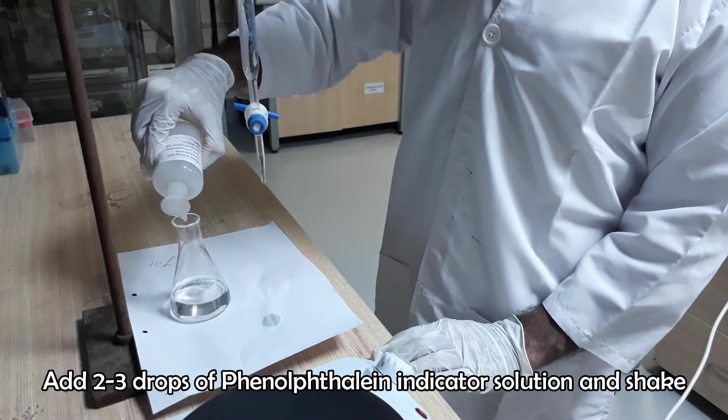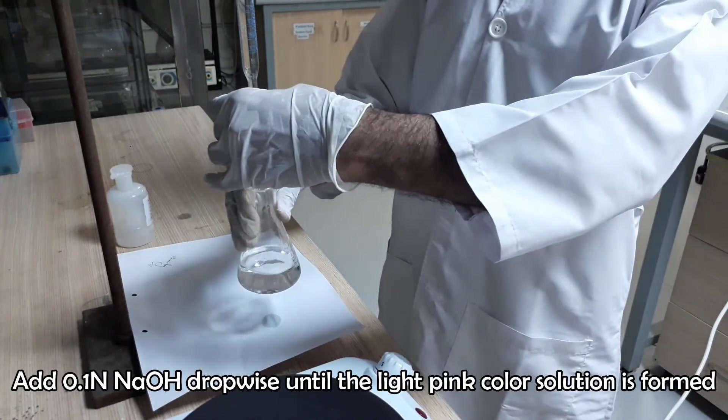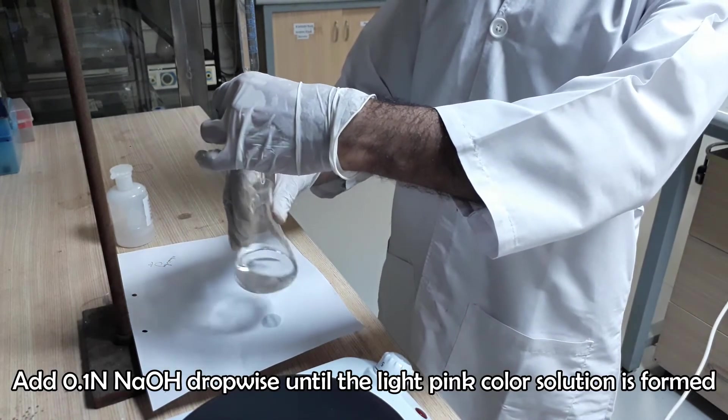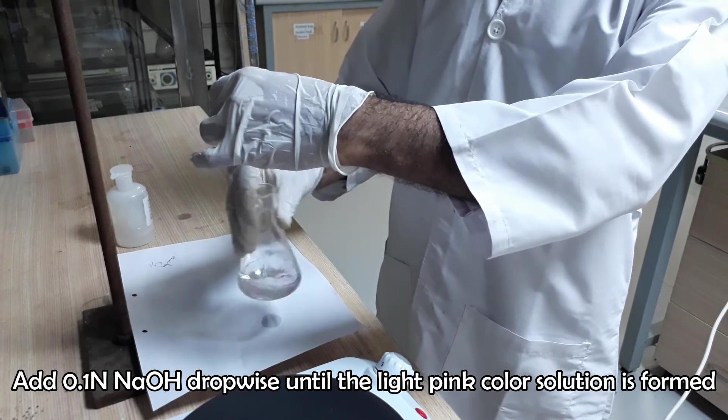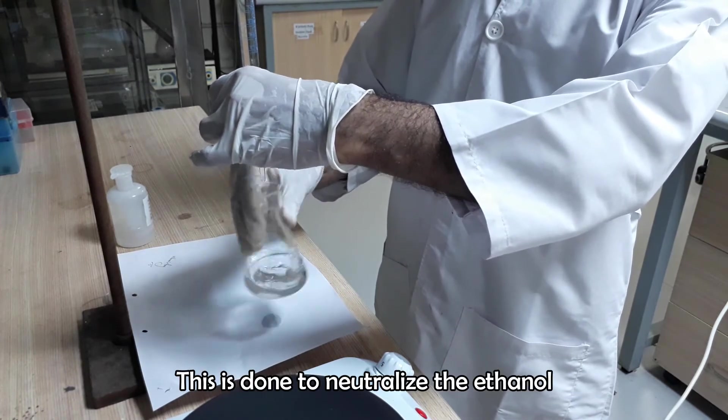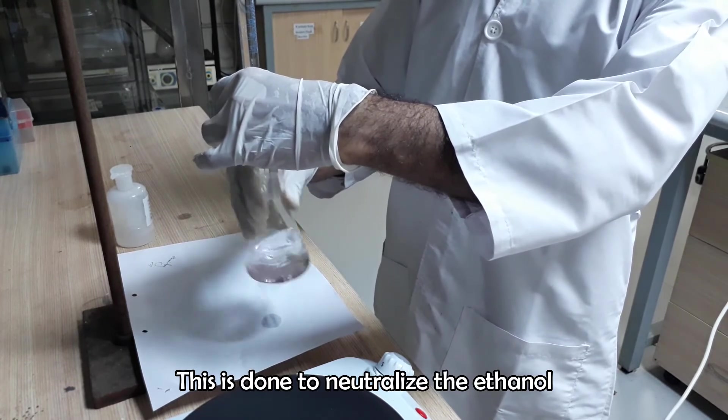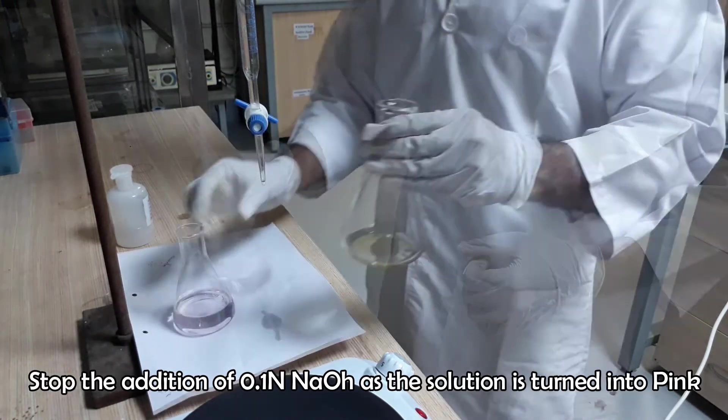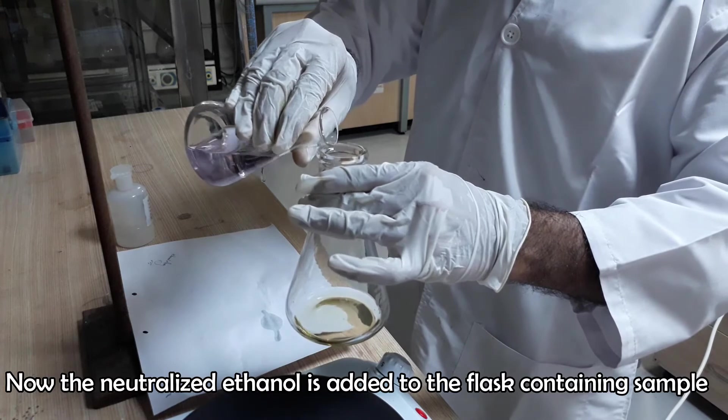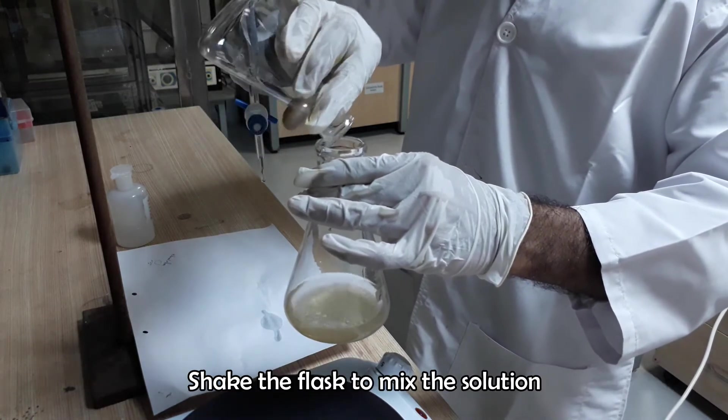Add a few drops of phenolphthalein indicator solution and neutralize the ethanol by adding 0.1 normal sodium hydroxide. Now add the neutralized ethanol in the flask with the sample and shake to mix the solution.